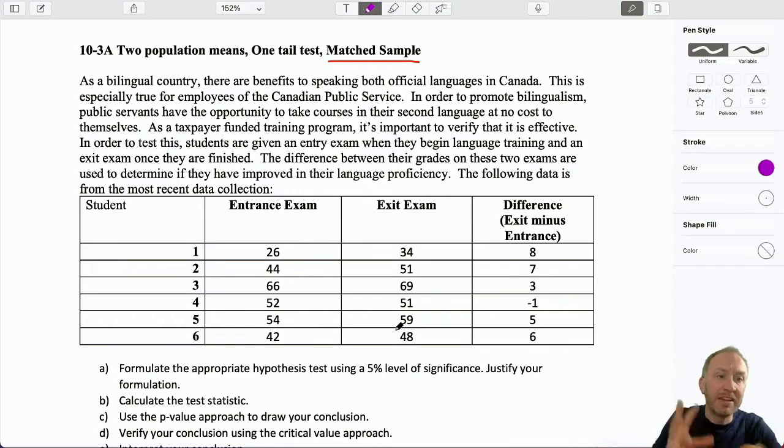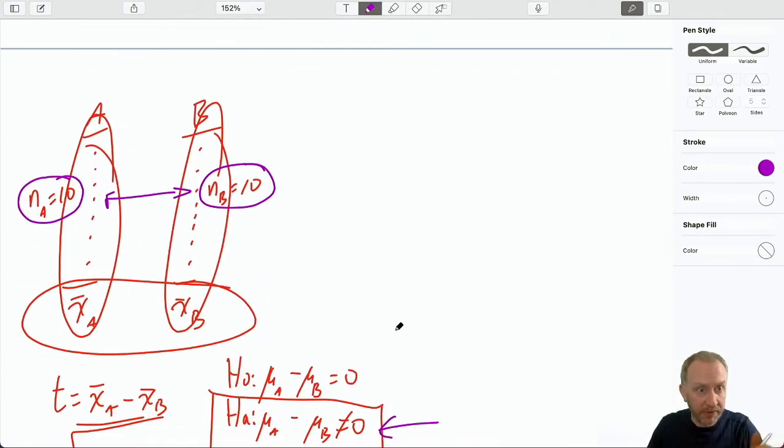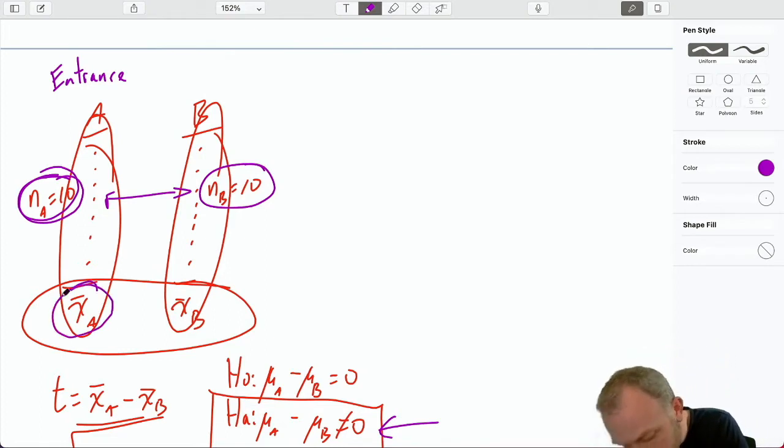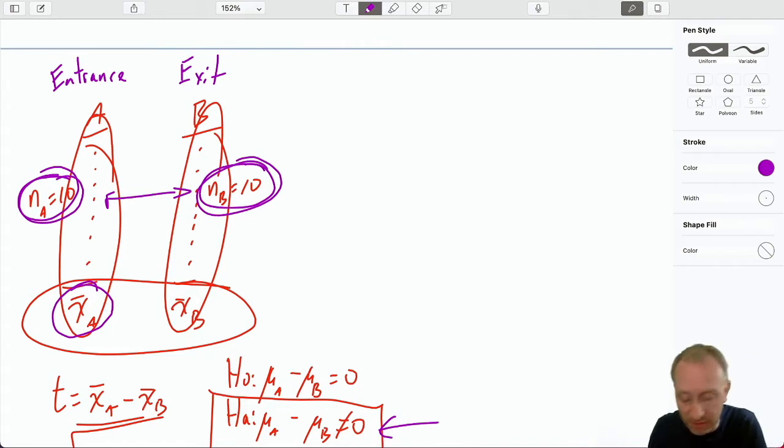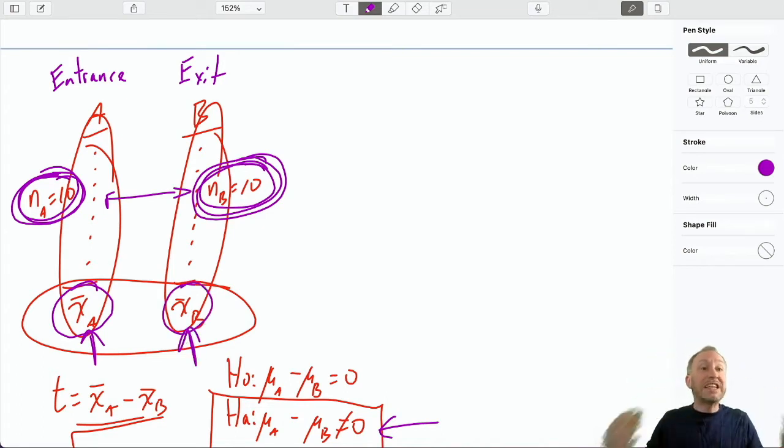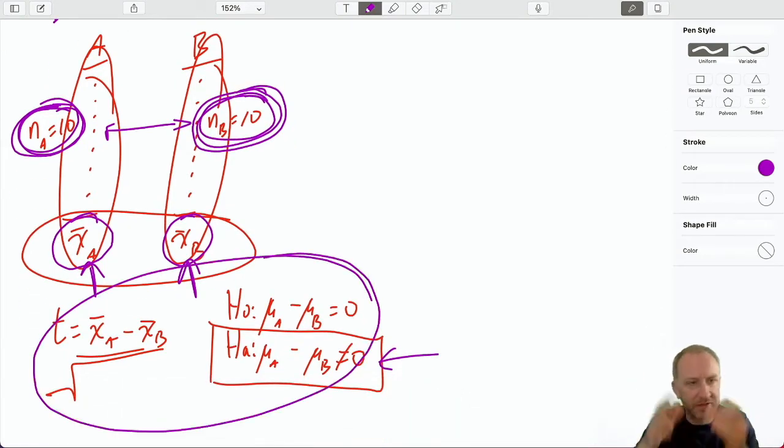To think of this as two independent samples, maybe I could have had a group of 10 students write the entrance exam, and then I have their average grade. Perhaps that very same day I have another group of a different 10 students. So here I have 10 students write an entrance exam and a different 10 students write an exit exam. Then I have the average grade of a student starting the program and the average grade of a student finishing the program. Then I can do my test to see if there's a difference.